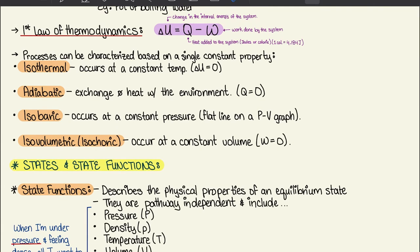Moving on to the First Law of Thermodynamics: ΔU = q - w, where ΔU is the change in internal energy of the system, q is heat added to the system (in joules or calories; 1 cal = 4.184 J), and w is work done by the system. For an isothermal process, which occurs at constant temperature, ΔU = 0, meaning there is no change in internal energy.